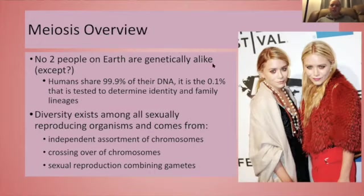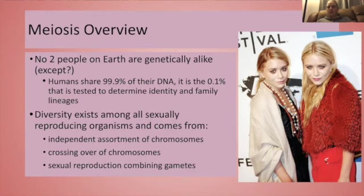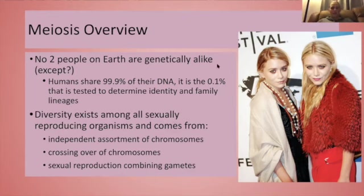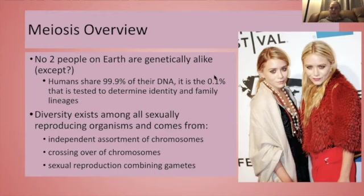No two people on Earth are genetically identical except for identical twins. Identical twins form when an egg is fertilized by a sperm and that zygote splits to become two zygotes that are genetically the same — they are clones of one another. Each one of those zygotes then goes through mitosis, making the body cells for an individual, but those individuals have the exact same type of DNA. All humans share 99.9% of their DNA — it's this one-tenth of a percent that makes us different, and this one-tenth of a percent that can be tested to determine identity and family lineage, such as for paternity tests or crime scene investigations.